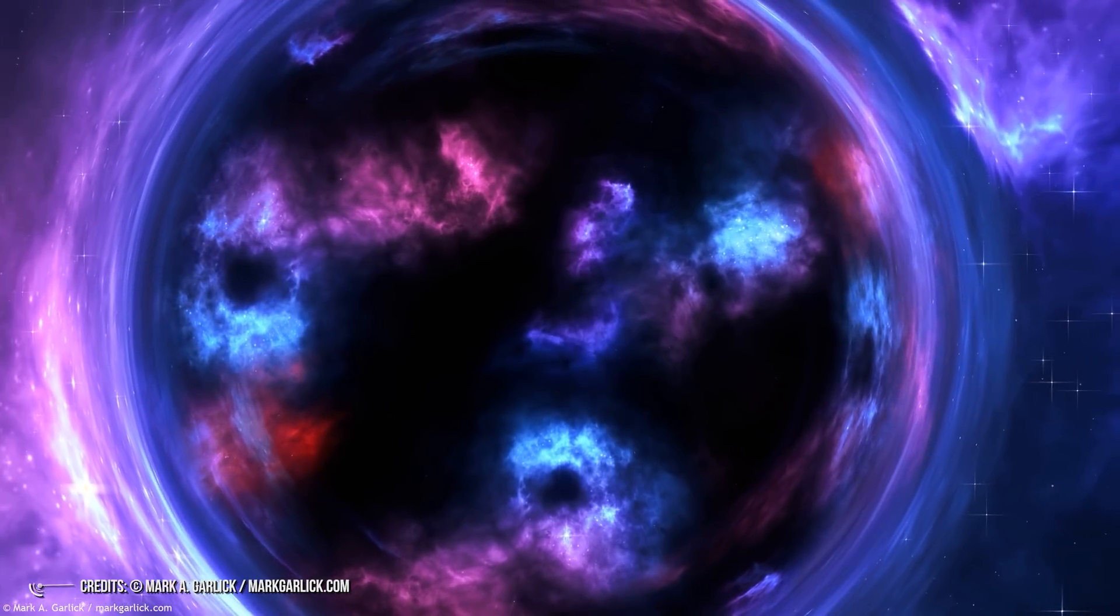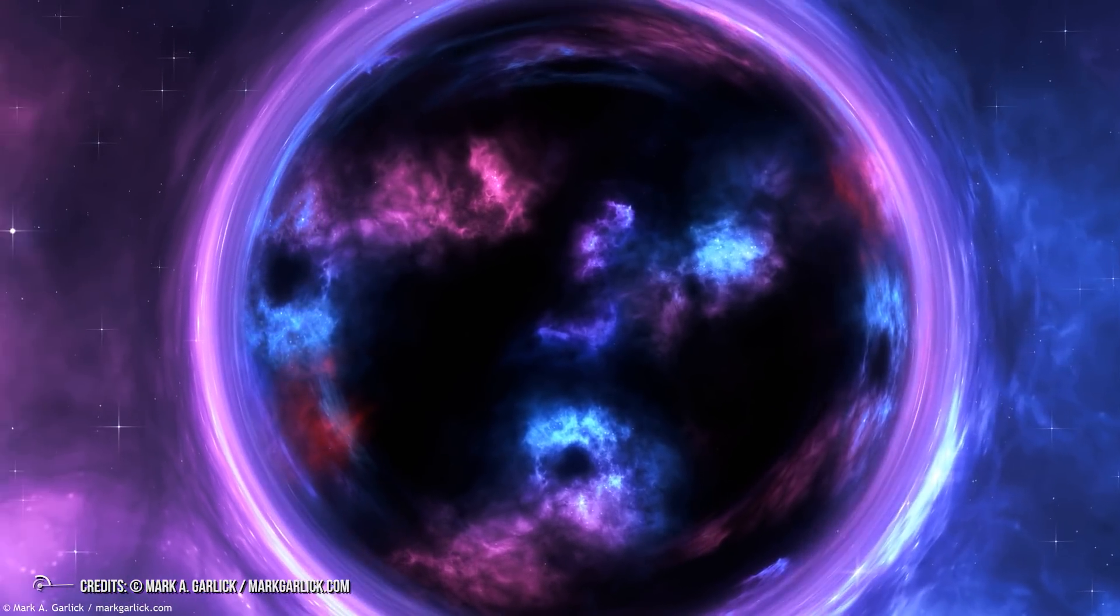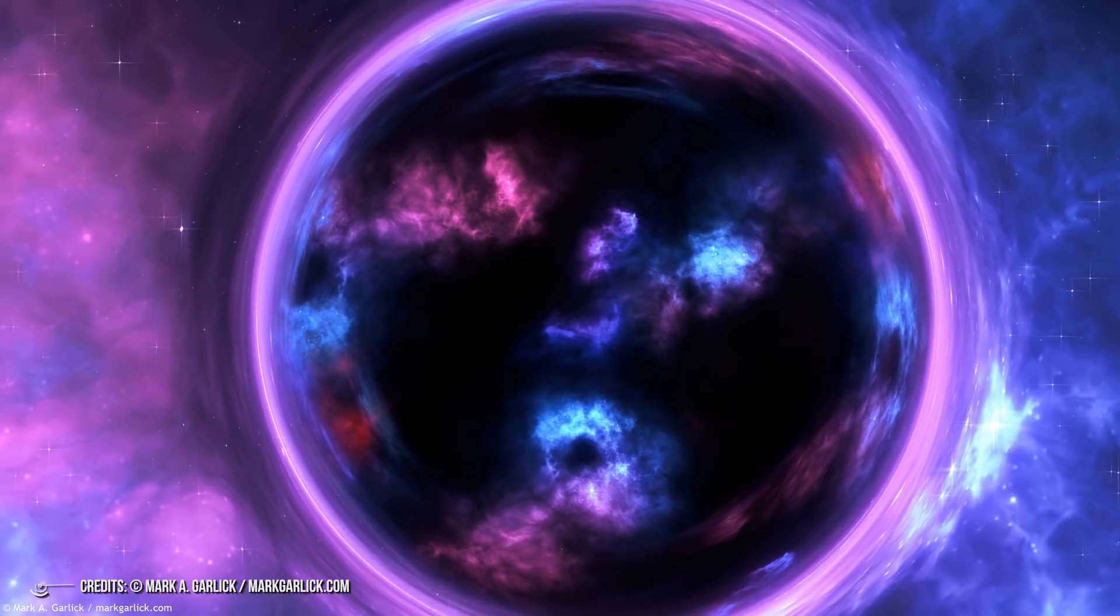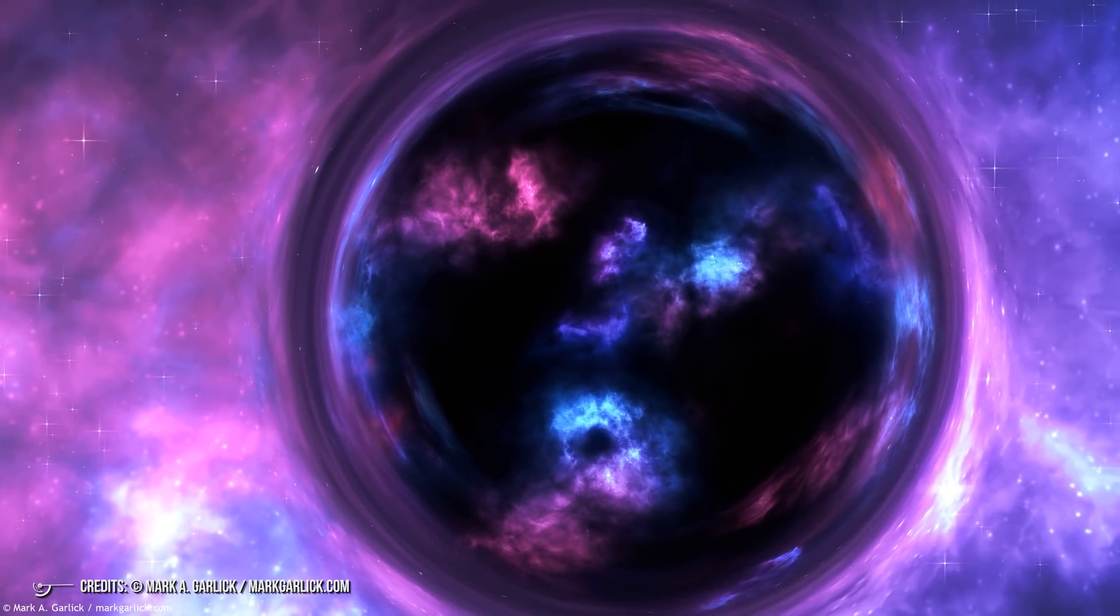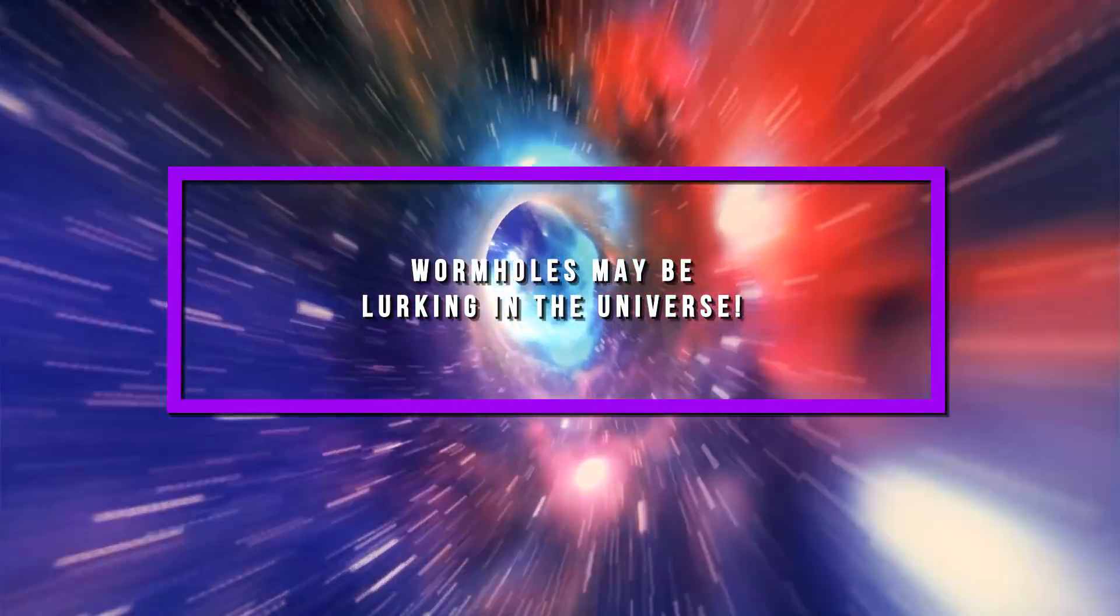For example, we know that an object might exist that breaks the rules of time and connects two parts of the universe, or two different universes. They have been called wormholes. Keep watching the video to get to know more about them. Wormholes may be lurking in the universe.